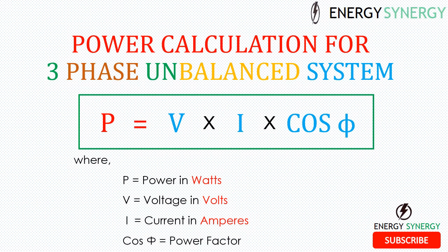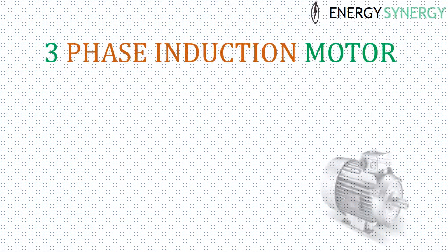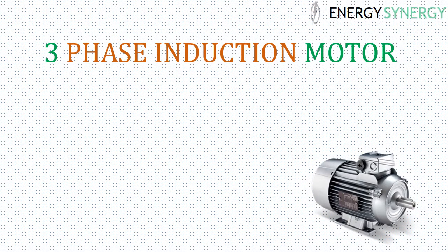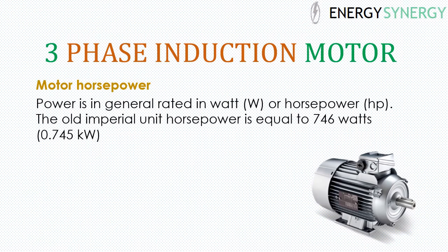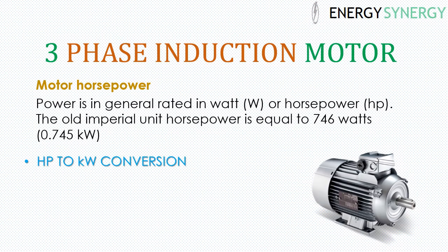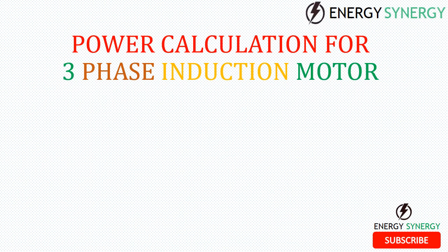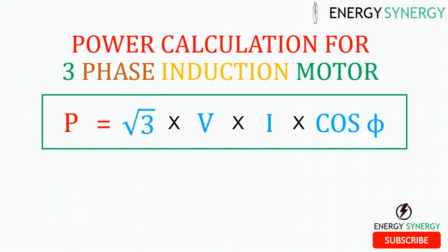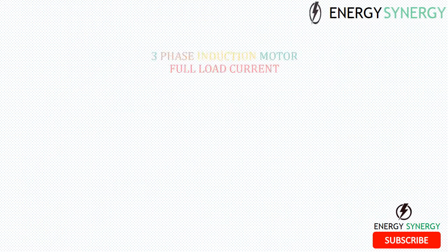Three-phase squirrel cage induction motors are widely used as industrial drives because they are self-starting, reliable, and economical. They are most commonly rated in kilowatt and HP (horsepower). The old imperial unit horsepower is equal to 746 watts, that is 0.745 kilowatt. To convert HP to kilowatts, multiply 1.341 by the HP value. The power calculation formula for a three-phase induction motor is: Power = √3 × V × I × cos φ. This method is used both theoretically and practically in industries.